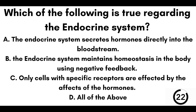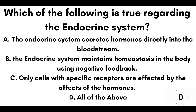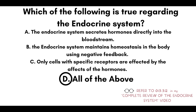Question number one: which of the following is true regarding the endocrine system? A) The endocrine system secretes hormones directly into the bloodstream. B) The endocrine system maintains homeostasis in the body using negative feedback. C) Only cells with specific receptors are affected by the effects of the hormones. Or D) All of the above. Our answer here is D, all of the above.